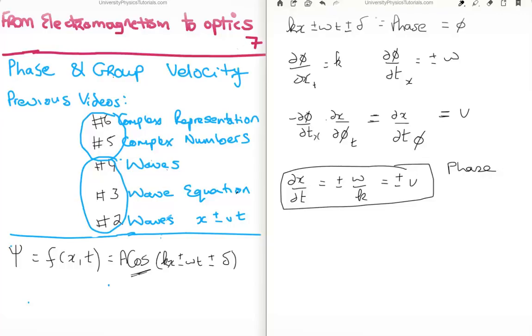And we call this the phase velocity. Why do we call this the phase velocity? Well, clearly because this is the velocity with which the phase is changing.